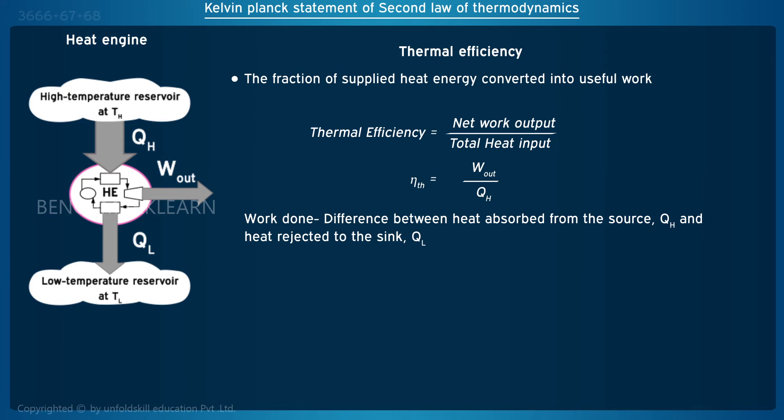The work done is the difference between heat absorbed from the source QH and heat rejected to the sink QL. So the net work output equals QH minus QL, giving: eta (η) = 1 minus QL divided by QH.